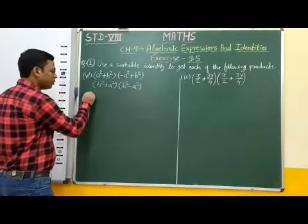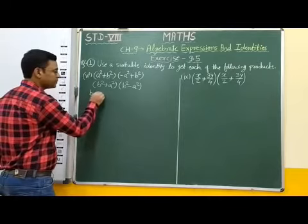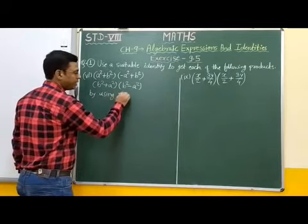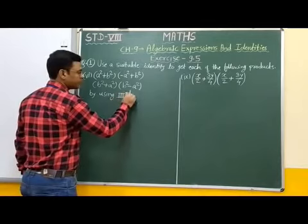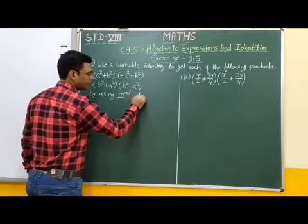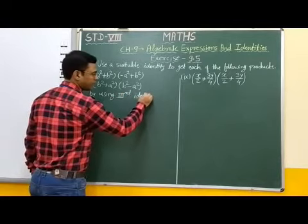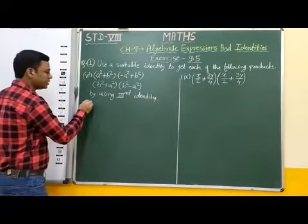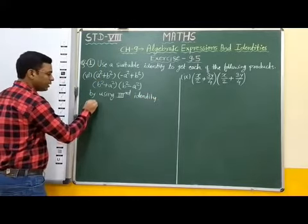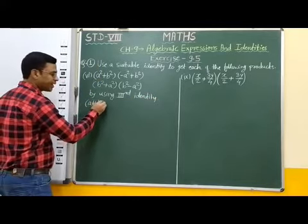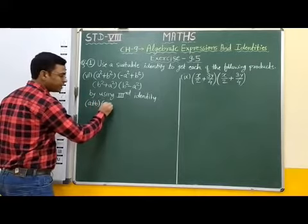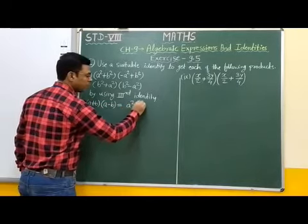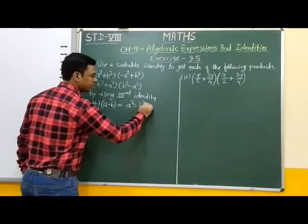By using the third identity — the third identity is: a plus b in the first bracket and a minus b in the second bracket, which is equal to a square minus b square.